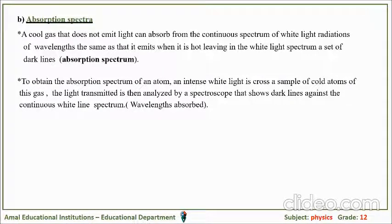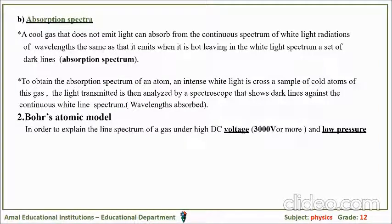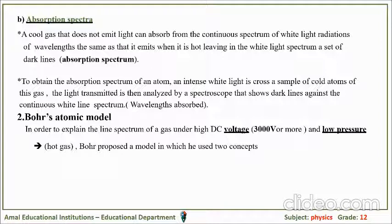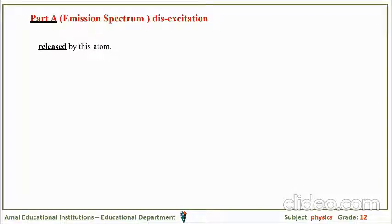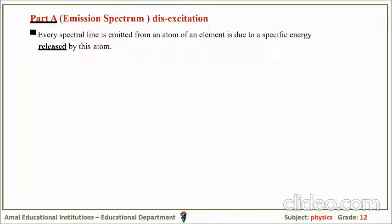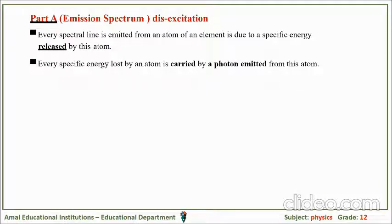Bohr's model of the atom answers the following aspects in order to explain the line spectrum of gas under high DC voltage — 3000 volts or more — and low pressure. Bohr proposed a model using the quantum concept and energy level concept. For the emission spectrum, every spectral line emitted from an atom is due to a specific energy released by that atom. Every specific energy lost by the atom is carried by a photon emitted from that atom.